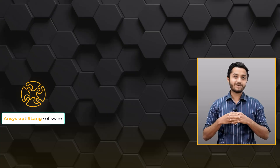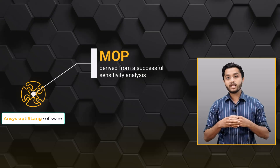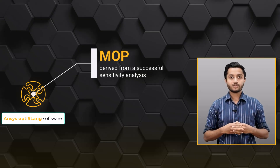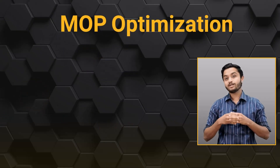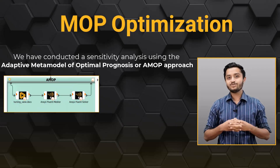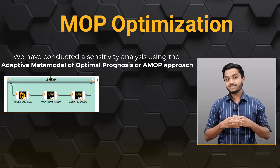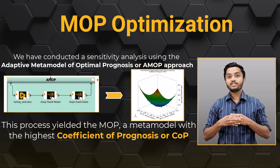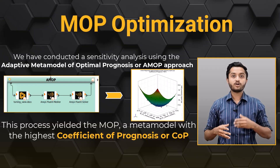ANSYS OptiSlang process integration and design optimization software offers two approaches for optimization. These include working with the metamodel of optimal prognosis (MOAP) derived from a successful sensitivity analysis, or opting for direct optimization. In our case we will perform the optimization using the MOAP. We conducted a sensitivity analysis using the adaptive metamodel of optimal prognosis (AMOP) approach, which yielded the MOAP — a metamodel with the highest coefficient of prognosis (COP). This MOAP will be utilized for our optimization.